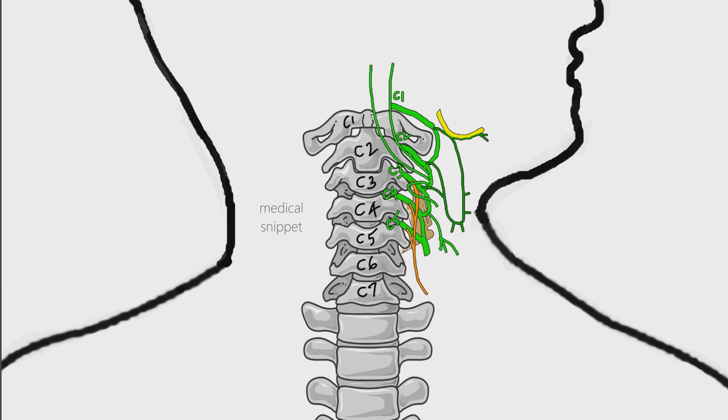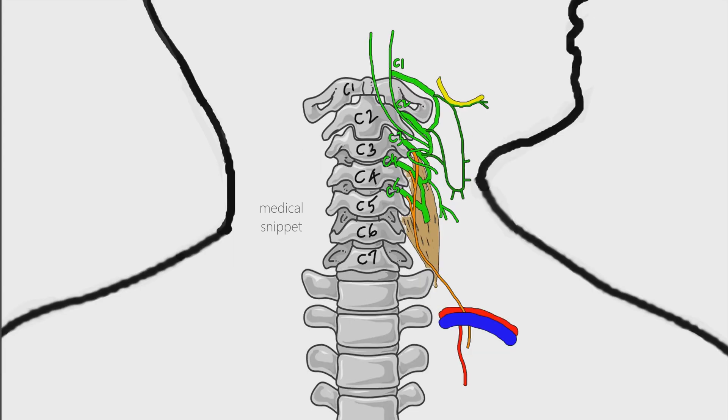In the neck the phrenic nerve lies on the anterior surface of the scalenus anterior muscle. It passes anterior to the subclavian artery and posterior to the subclavian vein. The nerve enters the thorax after crossing the internal thoracic artery from lateral to medial side.